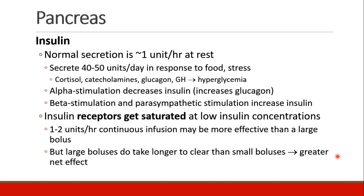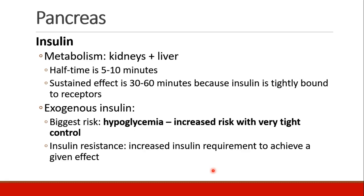The insulin receptors get saturated at surprisingly low insulin concentrations, which means that a continuous infusion of one to two units per hour may actually be more effective than a large one-time bolus, although large boluses do take longer to clear than small boluses, leading to a greater net effect in some patients. Insulin is metabolized by the kidneys and the liver with a half-time of five to ten minutes, but the effect clinically may be sustained for as long as 30 to 60 minutes because insulin is so tightly bound to its receptors.